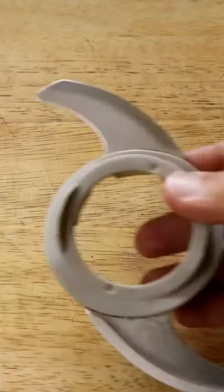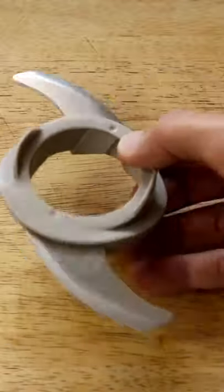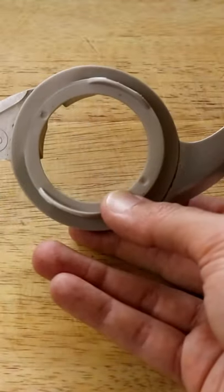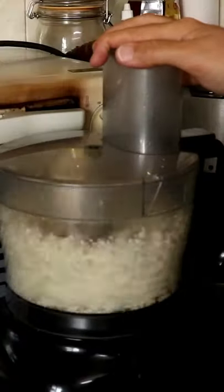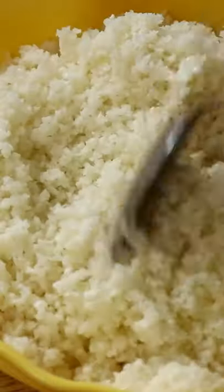Now if you don't have a grater attachment on your food processor, you can use the regular blade attachment and then just blitz it up. When you use the blade, you get more of a couscous consistency.